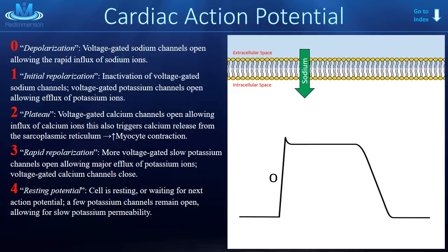Next is phase one, which is the initial repolarization phase, caused by the rapid inactivation of those sodium channels — almost as quickly as they open, they start to close again. At the same time, voltage-gated potassium channels start to open, allowing potassium to efflux or exit the cell. Potassium is also positively charged, so positive things leaving the cell make it more negative, which is why there's a little dip in the voltage.